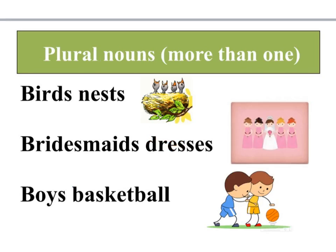Sometimes, however, we have plural nouns which end in 's' — there's more than one. For example, the birds' nests. There are lots of birds; who owns the nests? It's the birds — plural. When this is the case, we put the apostrophe after the 's' to show that it is a plural.